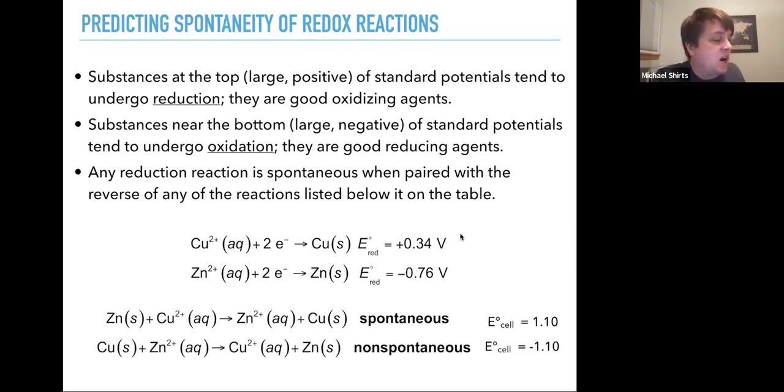Whereas the opposite copper oxidizing and zinc reducing is non-spontaneous. It has a standard cell potential of minus 1.10. So that's what you want to do. You want to find something that's more negative, flip it around and then that total reaction will happen.